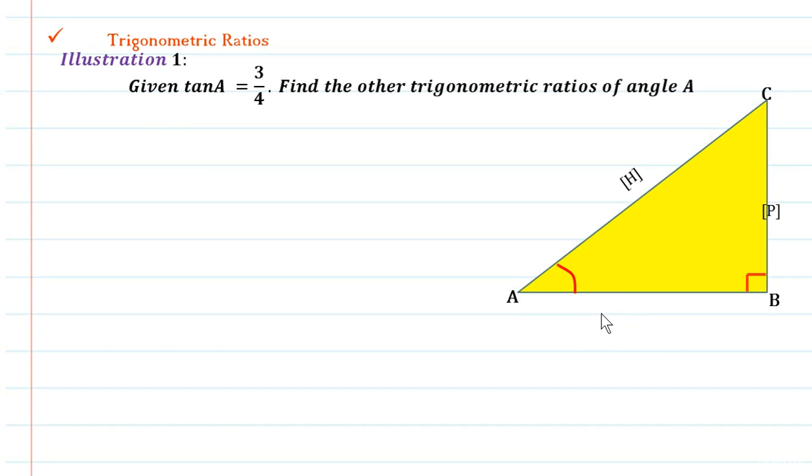It is very easy to mark hypotenuse, perpendicular, and base. If you are sure about the opposite side, then you can never get the combination wrong.